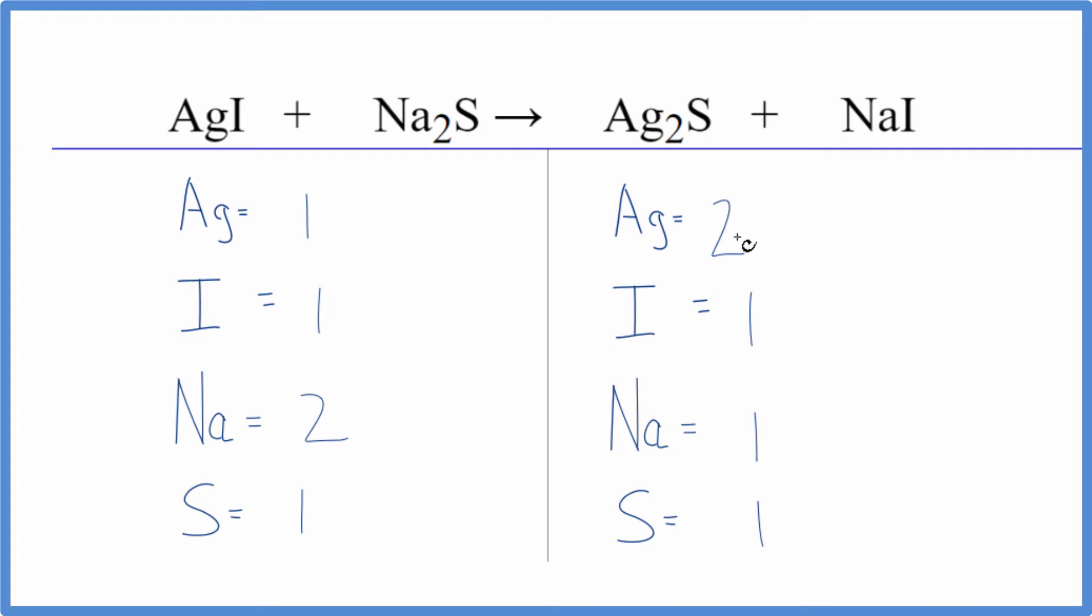Why don't we put a two in front of the AgI? So one times two, that would give us two silver atoms. Those would be balanced, but this two, it goes to everything. So we have one times two, that would give us two iodine atoms.